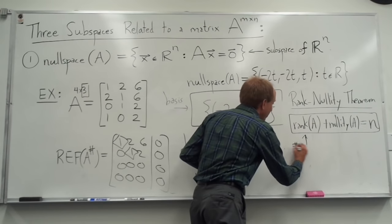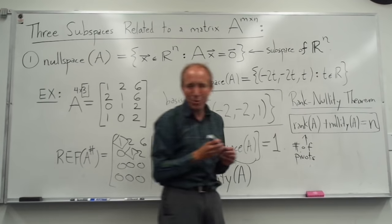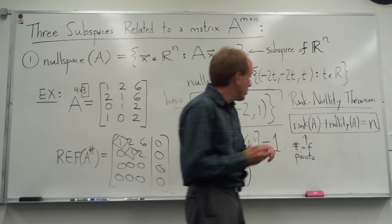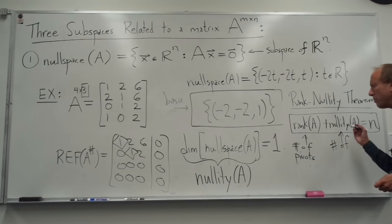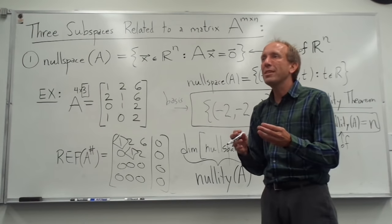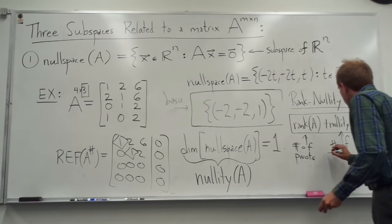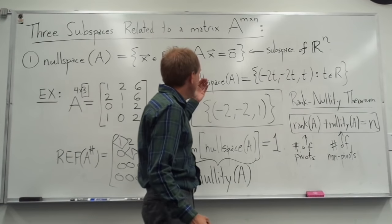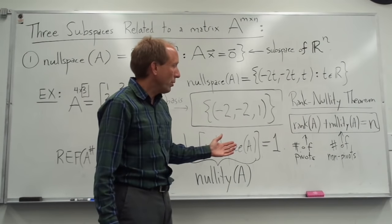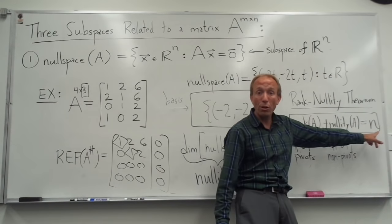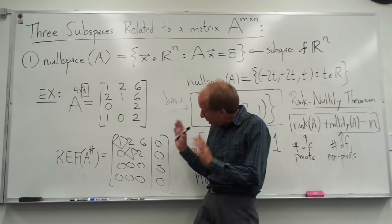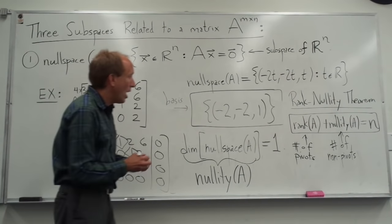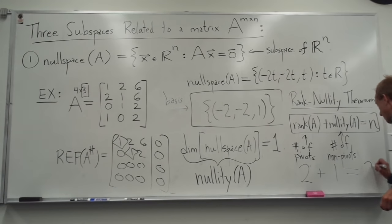This is easy to understand. The rank is the number of pivots in the matrix. Here in the row echelon form we have two pivots. The nullity is the number of free variables, which is just the number of unpivoted columns — the number of non-pivots. This makes total sense: there are n columns total, and each one either has a pivot or doesn't. So if I have two pivots and one non-pivot, the formula reads two plus one equals three.